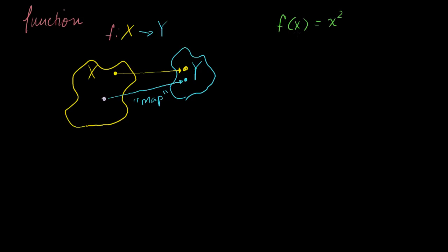This is a function — and I'll write it with f, though it doesn't always have to be f. In this case, f is a mapping from the real numbers. The real numbers are everything that I can put in here, and this is part of the function definition. I could constrain this to just be integers, or just even numbers, or just even integers — but I'm defining the function to be a mapping from real numbers to real numbers.